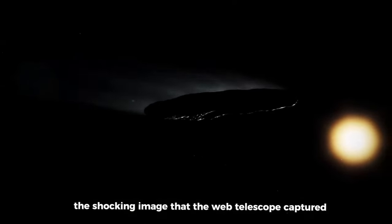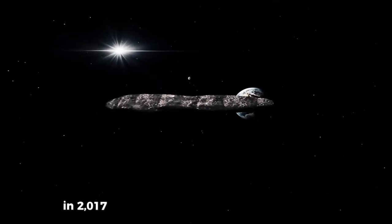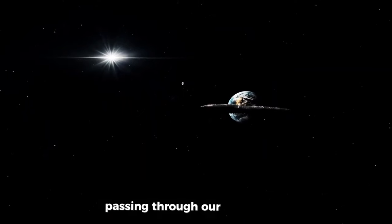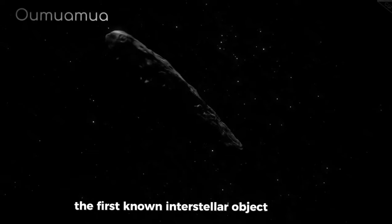Joe Rogan has finally revealed the shocking image that the Webb telescope captured, finally showing what Oumuamua looks like. In 2017, astronomers spotted something unusual passing through our solar system. It was Oumuamua, the first known interstellar object to visit us.